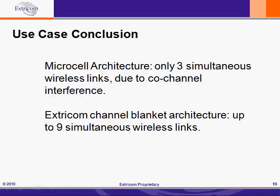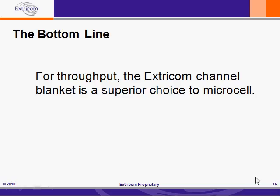To sum up, with the standard microcell architecture, even though we deployed nine cells in our use case, we found ourselves with only three channels of wireless LAN capacity, or less, due to co-channel interference. With the Extracom solution, the opposite is true. Even in the 2.4GHz band, the channel blanket architecture effectively provides up to nine channels of capacity, and in addition, each of those channels provides several more times the throughput due to segregation of legacy users. The Extracom channel blanket eliminates the severe throughput problems of the microcell architecture and provides the kind of bandwidth that the school in our use case was looking for. So if throughput is important to you, you should be taking a very close look at the channel blanket architecture — it simply works better than the standard microcell architecture.